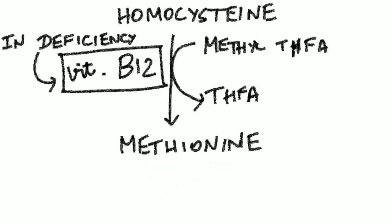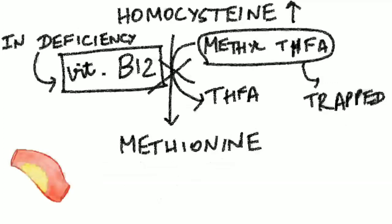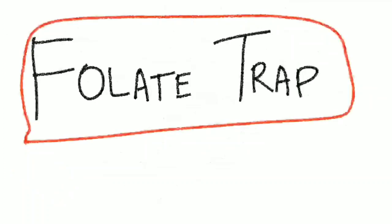So in deficiency of vitamin B12, what happens is that the methyl-THFA will now be converted to THFA, and this will accumulate in the body along with the accumulation of homocysteine. So since this methyl-THFA, the folic acid is getting trapped in methyl-THFA, this is called as folate trap, and homocysteine levels are elevated, leading to atherosclerotic events. That is what is causing folate trap, because the methyl-THFA is getting accumulated; the folic acid is getting trapped in that.